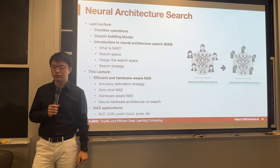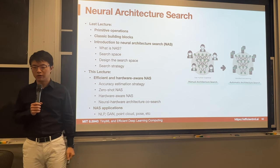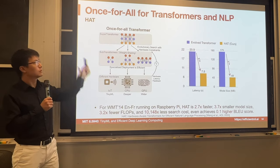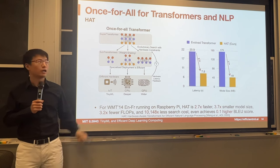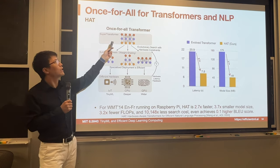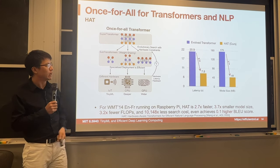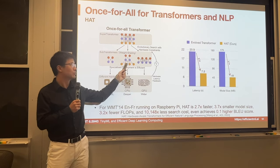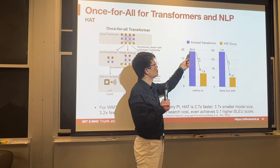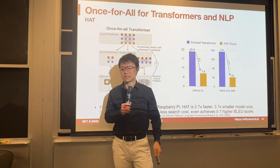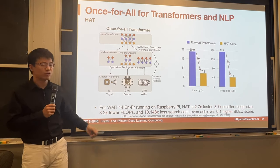Now switching to applications — how do we accelerate real-world applications with NAS, particularly with the Once-for-All approach? First, transformers. We've talked a lot about CNNs — what about transformers? This work expands OFA to transformers: train a once-for-all transformer and derive different sub-transformers by weight sharing. A smaller transformer for IoT devices, a wider transformer for GPU, a deeper or shallower transformer for CPU. Compared with the evolved transformer, the HAT (Hardware-Aware Transformer) achieves much better latency and model size while preserving accuracy, and can run on Raspberry Pi as well as GPU with specialized models.